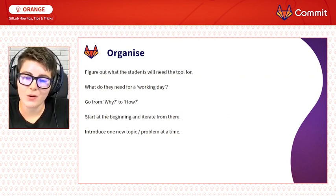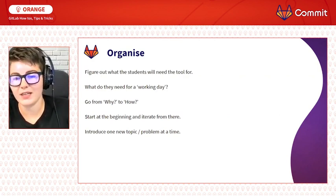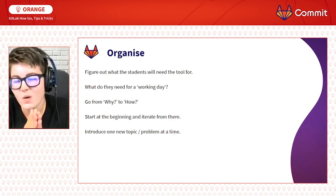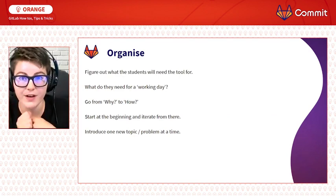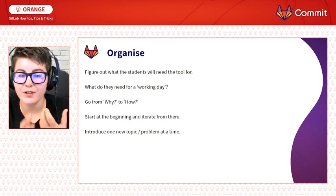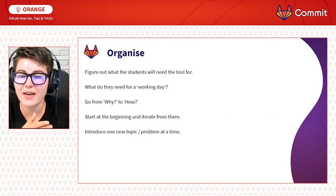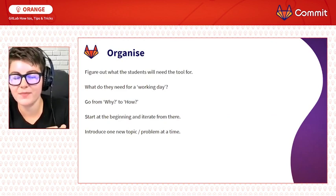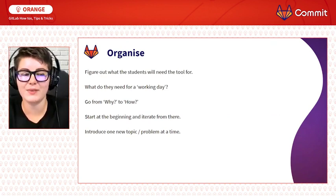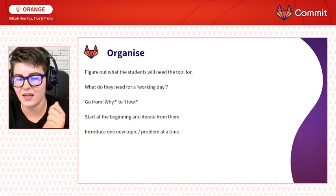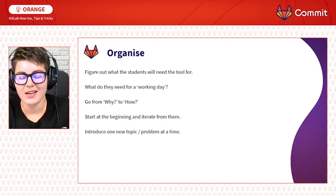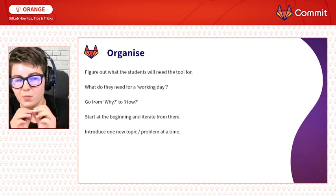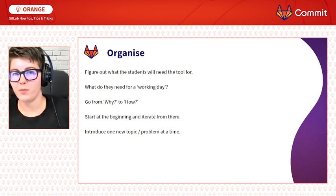I like starting with a 'why' when it comes to explanations. The 'why' would be: you want to see all iterations of your development progress so you can find errors faster. So how do you do that? You start making small commits. Start at the beginning — I just want to see what happened — and iterate from there. And make sure you only introduce one new topic or one new problem at a time.